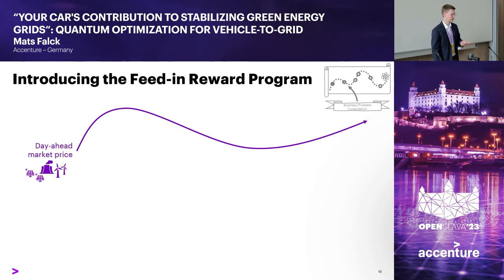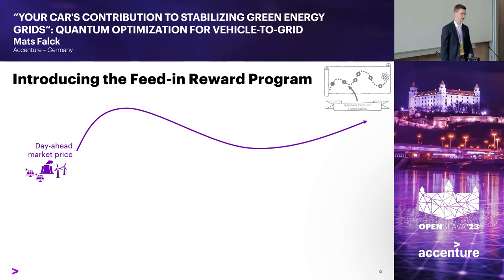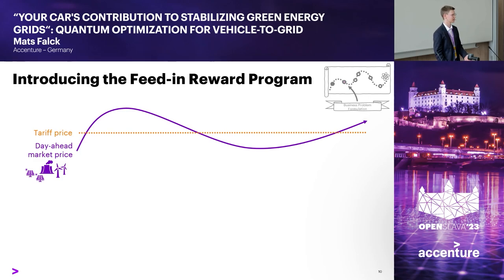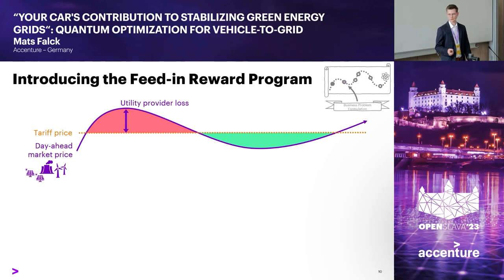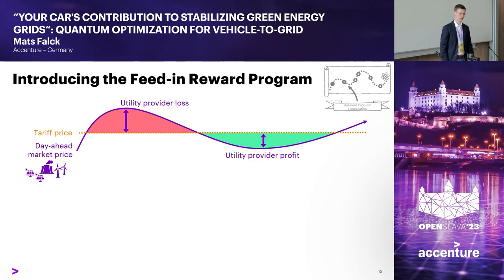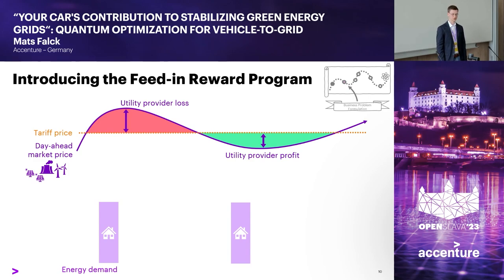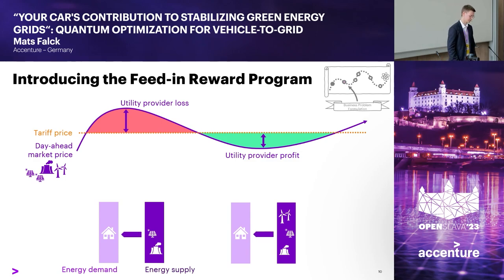Energy providers buy energy on markets similar to stock markets ahead of time. Baseload energy is bought many months in advance, but there's also the day-ahead market where energy is bought one day before use. Due to varying energy generation, these prices fluctuate a lot, while the utility provider sells to end users at a fixed price. This creates times where market price is higher than the sale price — a loss — and times where it's lower — a profit.